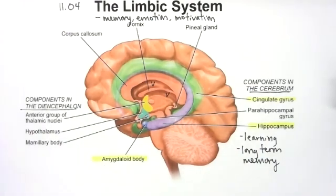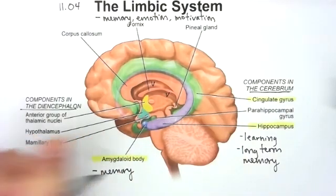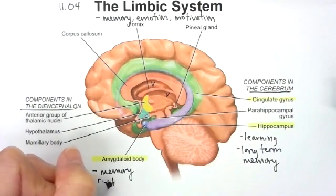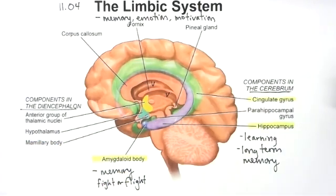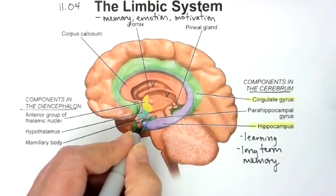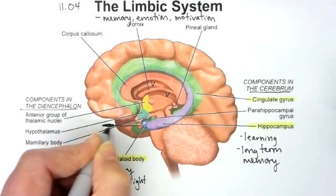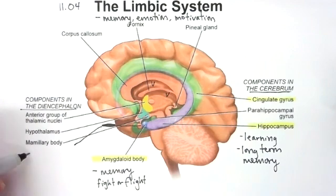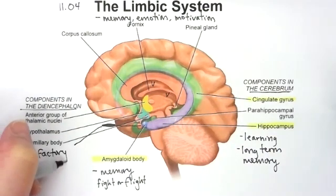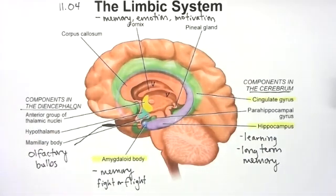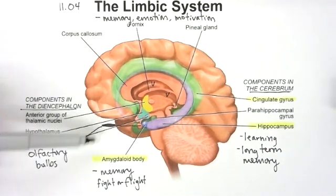The other one I want to talk about is the amygdaloid body. This plays a part also in memory and has a part in fight or flight — we're talking about fear and your fear response. What's interesting, and you don't see it in this diagram, is that the sensory bundle of nerves for smell are called the olfactory bulbs. They lie right over top of that cribriform plate, and smells from the outside environment filter up, hit that olfactory bulb, and go straight into your limbic system.